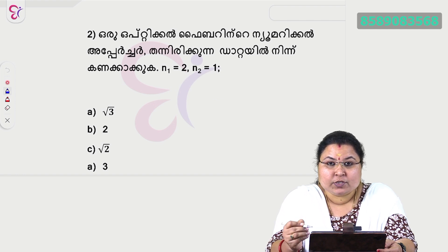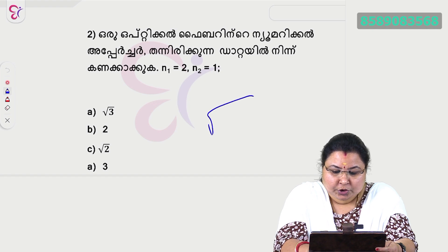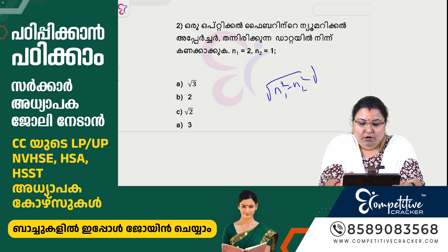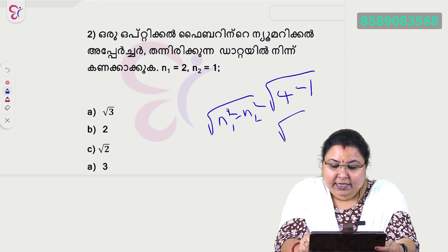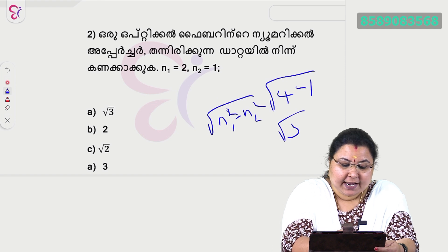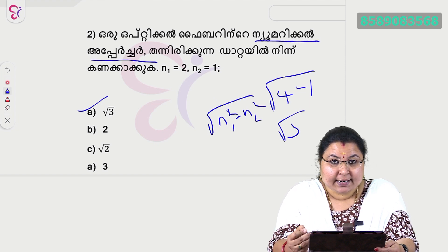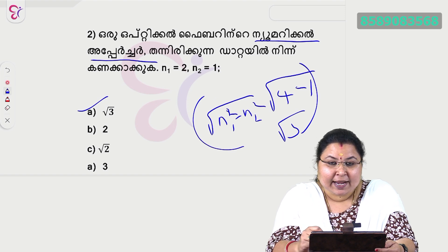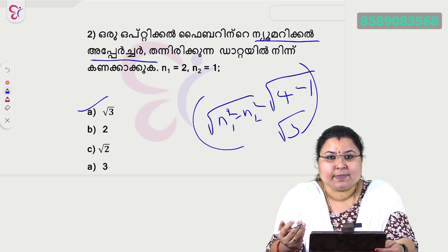Now let's look at numerical aperture. What is the numerical aperture? What is the formula? The formula is root of n1 squared minus n2 squared. Here n1 is 2 and n2 is 1. So let's solve it — substitute N1 and N2 into the equation: root of n1 squared minus n2 squared.